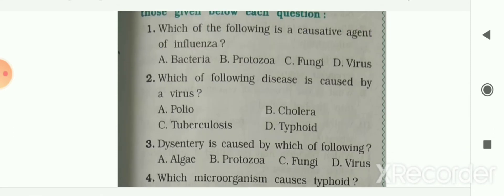Question 1 is 'choose the correct option.' Which of the following is a causative agent of influenza? Options are bacteria, protozoa, fungi, and virus. Your answer is virus — option D. Virus is a causative agent of influenza.